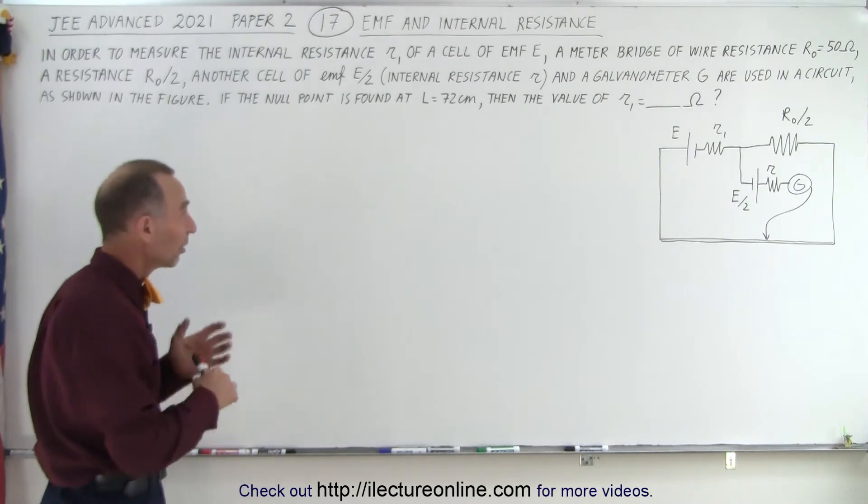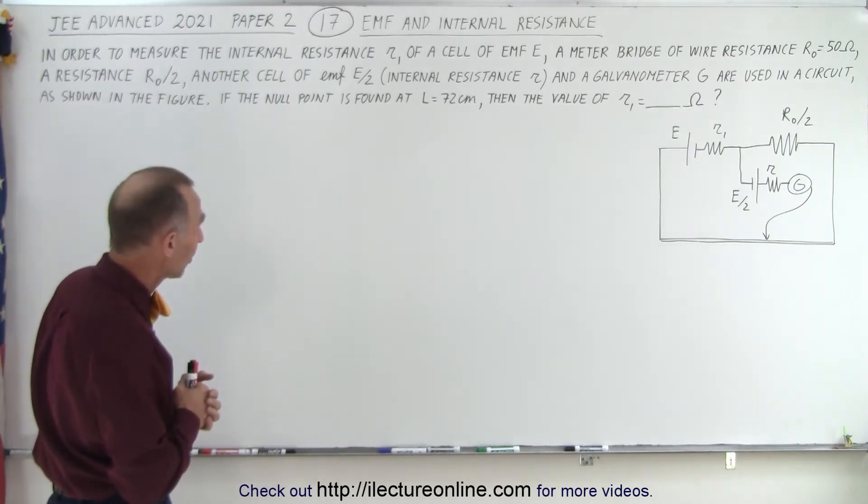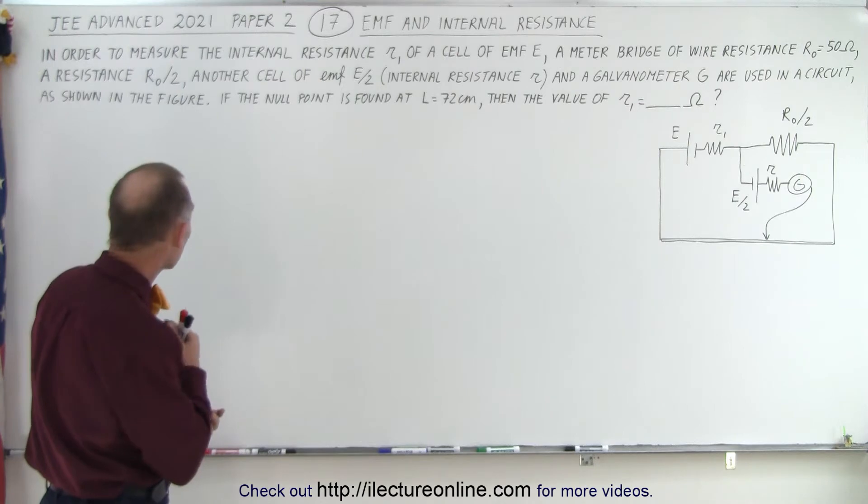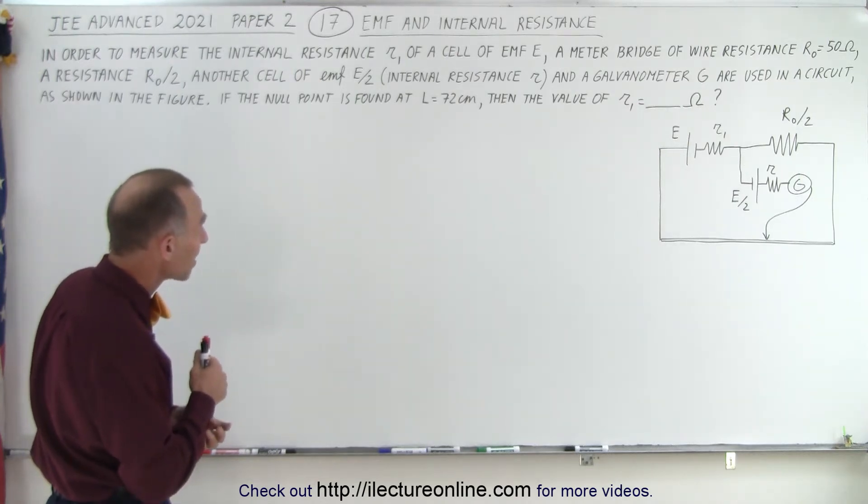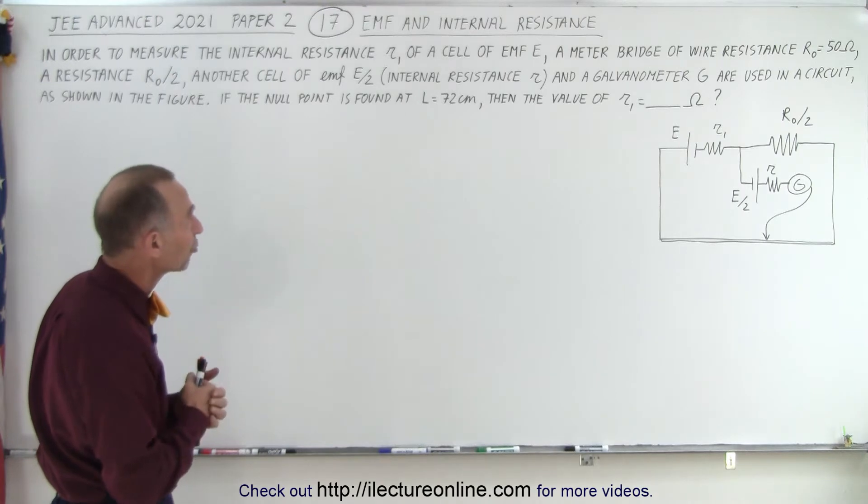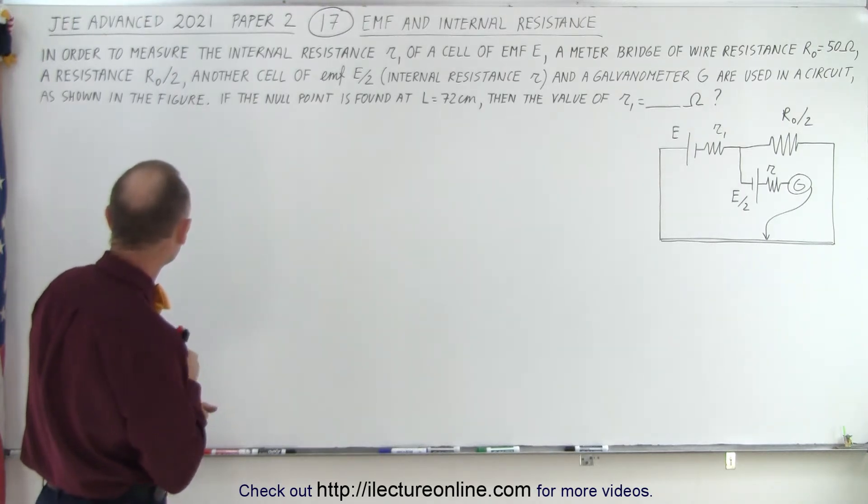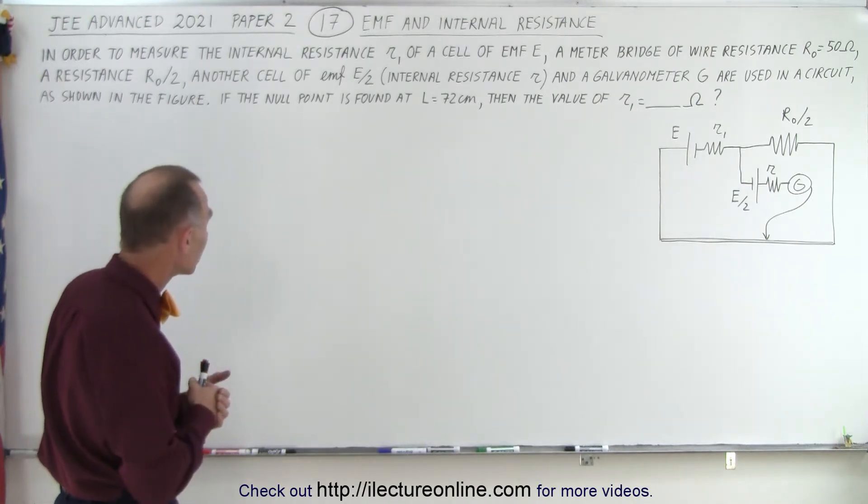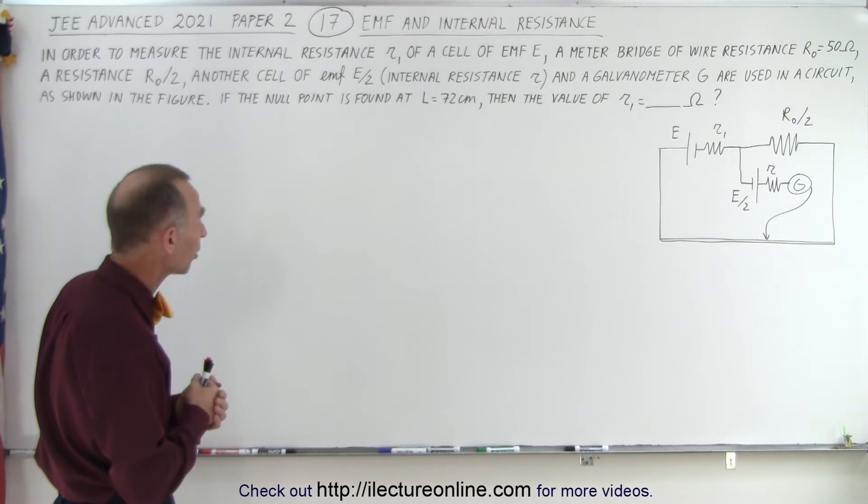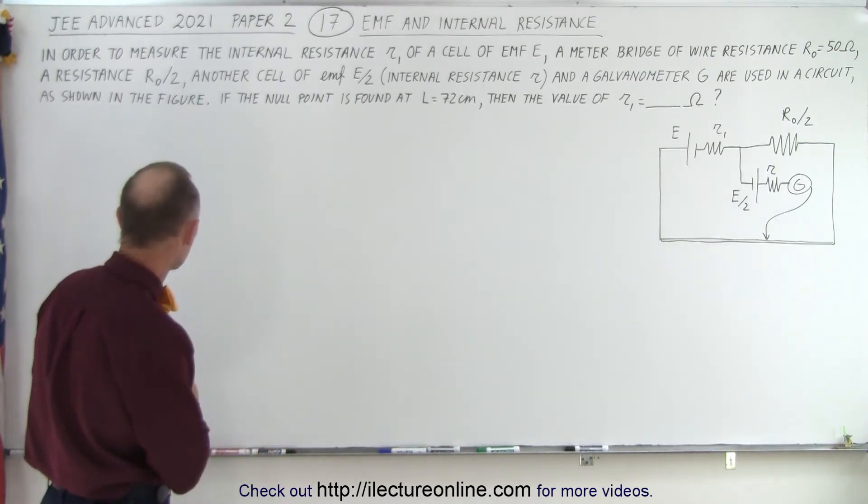It deals with EMF and internal resistance. It says: in order to measure the internal resistance R1 of a cell of EMF E, a meter bridge of wire resistance R equals 50 ohms is used, a resistance of R/2, another cell of EMF E/2 with internal resistance R, and a galvanometer are all used in a circuit as shown in the figure.